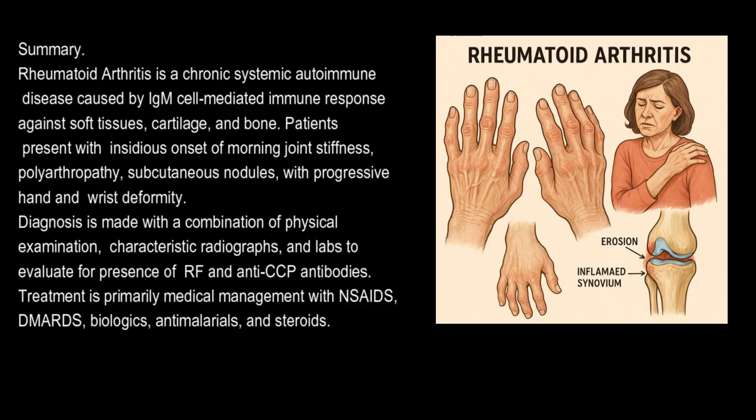Rheumatoid arthritis is a chronic systemic autoimmune disease caused by IgM cell-mediated immune response against soft tissues, cartilage, and bone. Patients present with insidious onset of morning joint stiffness, polyarthropathy, subcutaneous nodules, with progressive hand and wrist deformity.